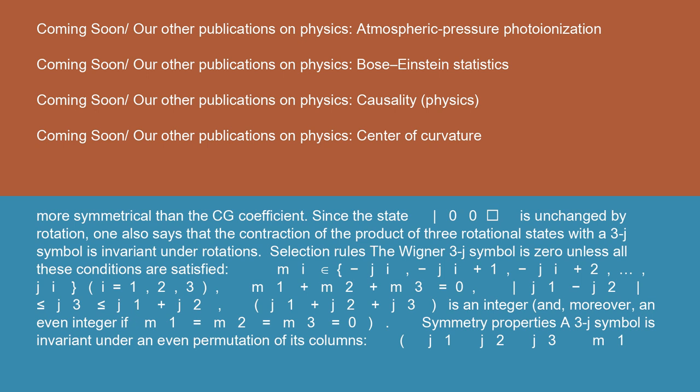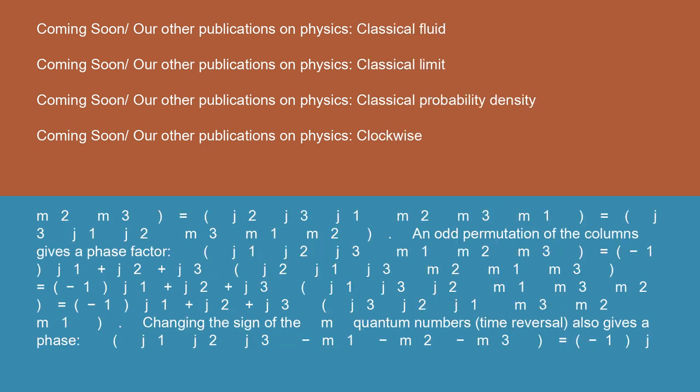Symmetry properties: a 3j symbol is invariant under an even permutation of its columns: (j1 j2 j3; m1 m2 m3) = (j2 j3 j1; m2 m3 m1) = (j3 j1 j2; m3 m1 m2). An odd permutation of the columns gives a phase factor: (j1 j2 j3; m1 m2 m3) = (-1)^(j1+j2+j3) * (j2 j1 j3; m2 m1 m3) = (-1)^(j1+j2+j3) * (j1 j3 j2; m1 m3 m2) = (-1)^(j1+j2+j3) * (j3 j2 j1; m3 m2 m1). Changing the sign of the m quantum numbers (time reversal) also gives a phase.